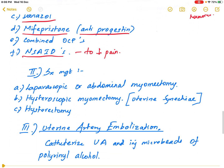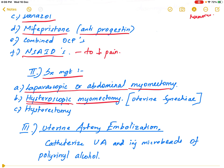Surgery is considered when there is excessive bleeding, chronic pelvic pain, rapid fibroid growth, or a large fibroid size. Surgical options include laparoscopic or abdominal myomectomy, and hysteroscopic myomectomy. A potential complication of hysteroscopic myomectomy is uterine synechia, so post-operative follow-up with hysterosalpingography is essential.